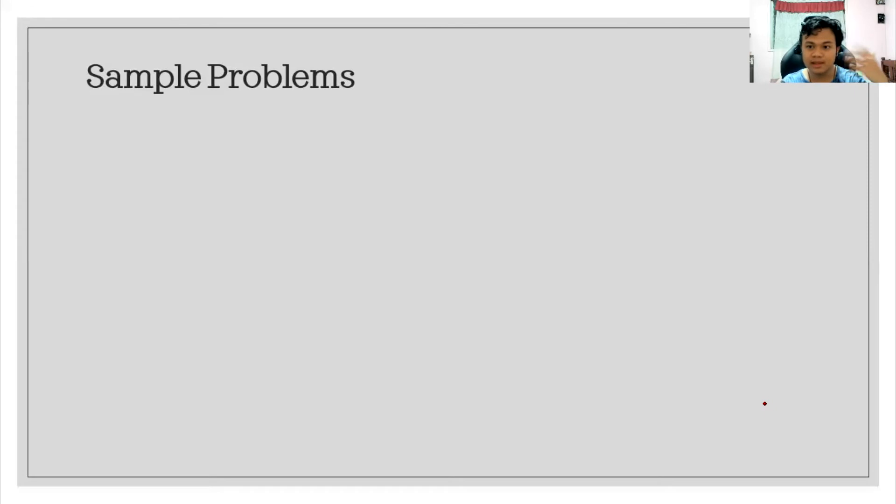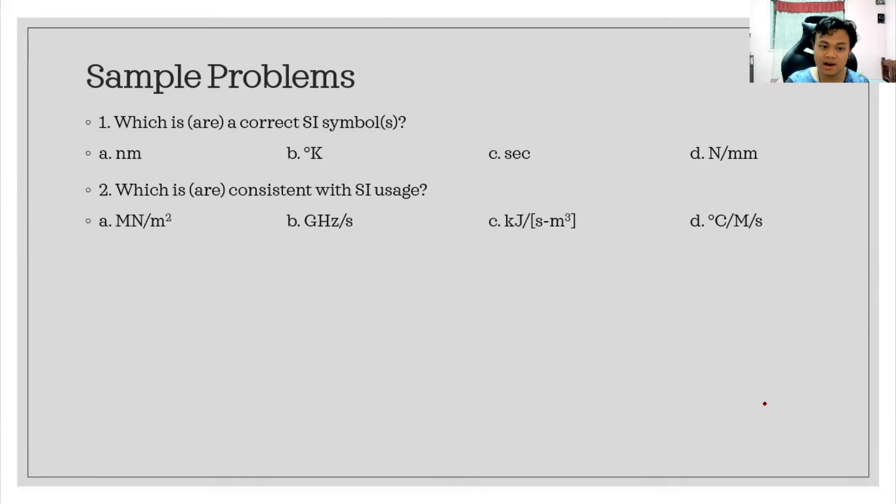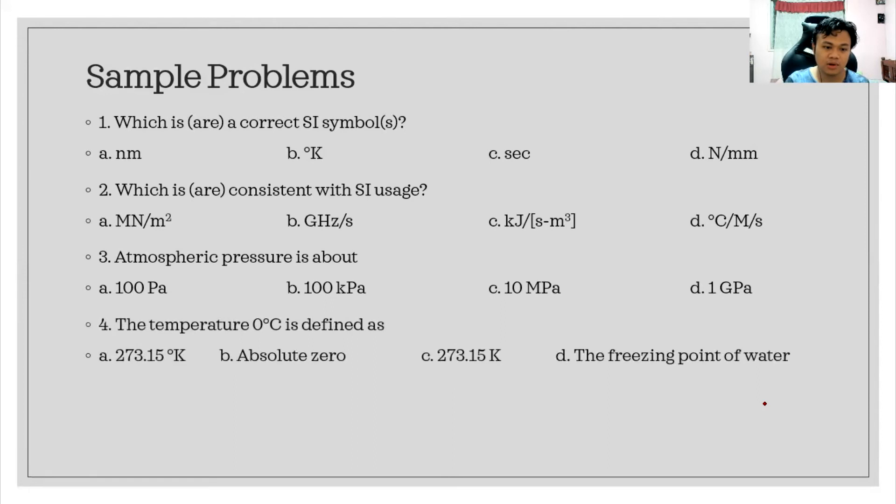Now sample problems for you to be energized or to pique your interest. I have some questions here. Which are the correct SI symbols? Which are consistent with SI usage? The atmospheric pressure is about 100 Pa, 100 kPa, 10 MPa or 1 GPa. For number four, we have the temperature. Zero degrees Celsius is defined as A: 273.15 Kelvin, B: absolute zero, C: 273.15 Kelvin, or D: the freezing point of water.